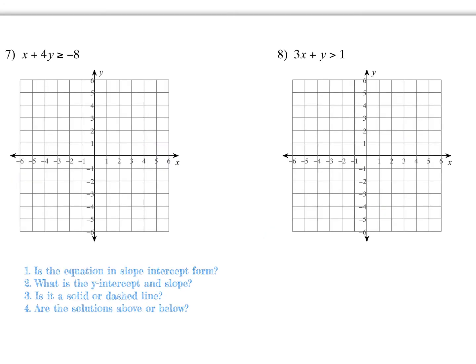For example seven, the equation is not in slope-intercept form, so rearrange it. Both x and y are on the left, so subtract x: 4y ≥ -x - 8. Then divide everything by four — the sign doesn't flip because we're dividing by a positive number. This gives y ≥ -¼x - 2, where the slope is negative one-fourth and the y-intercept is negative two.